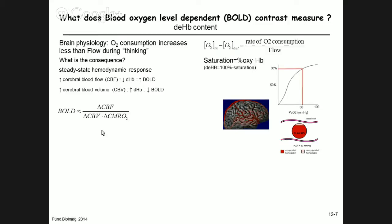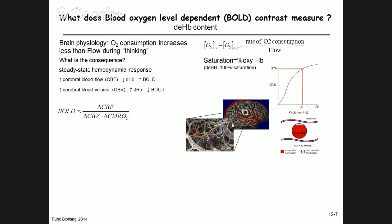If we look at the thinking brain, the red structures are blood vessels that supply nutrients such as oxygen and glucose to brain cells. Looking inside, we see a very intricate architecture of blood vessels that makes up our imaging voxel.